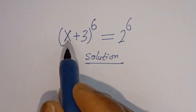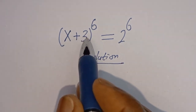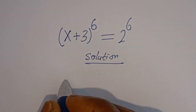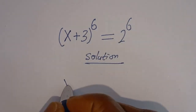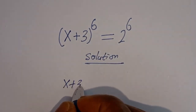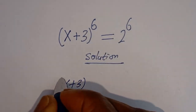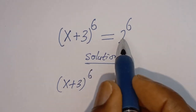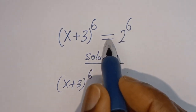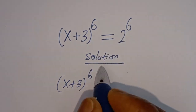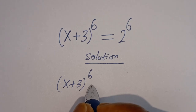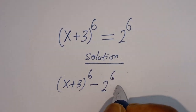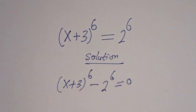From here we have x plus 3 to the power of 6 is equal to 2 to the power of 6. Let's bring this 2 to the power of 6 to this side: minus 2 to the power of 6 is equal to 0.